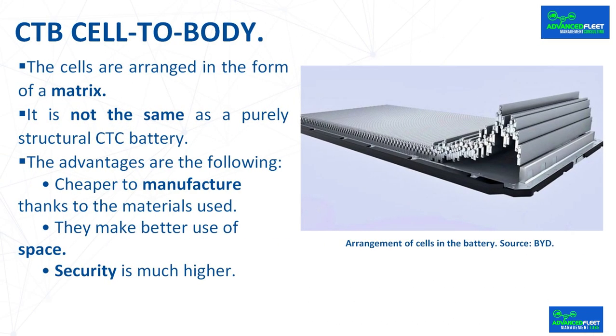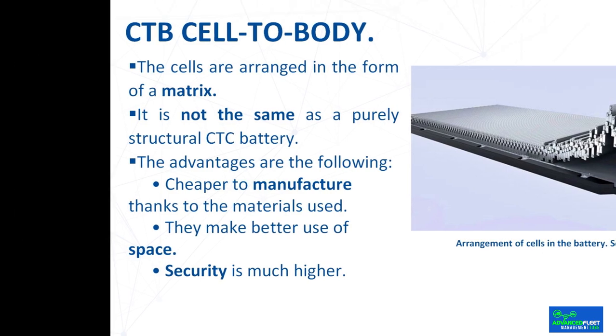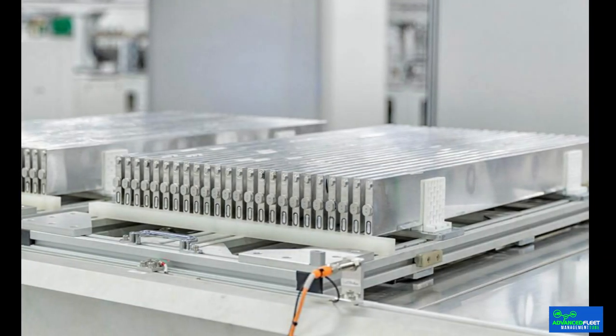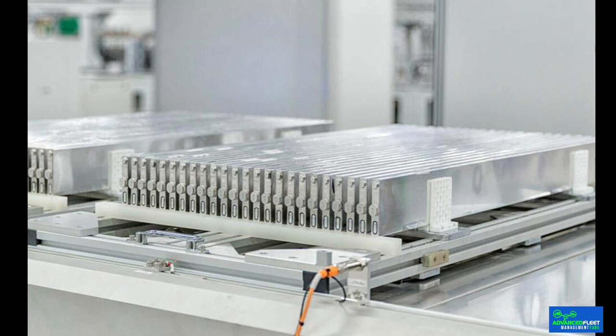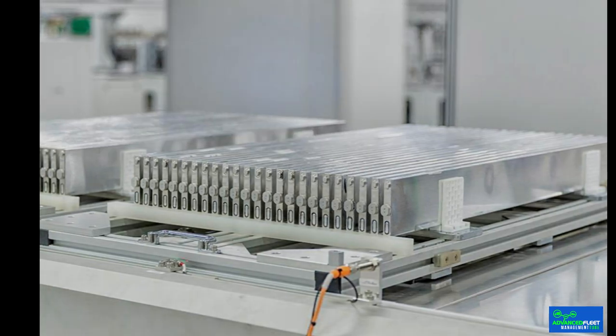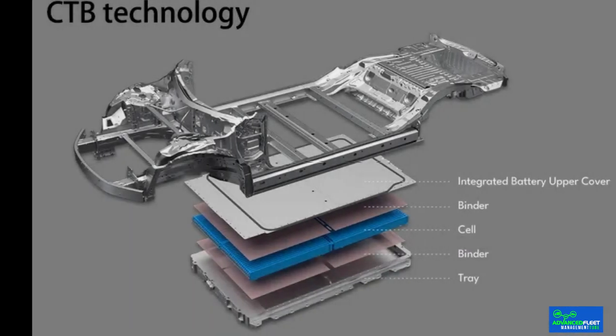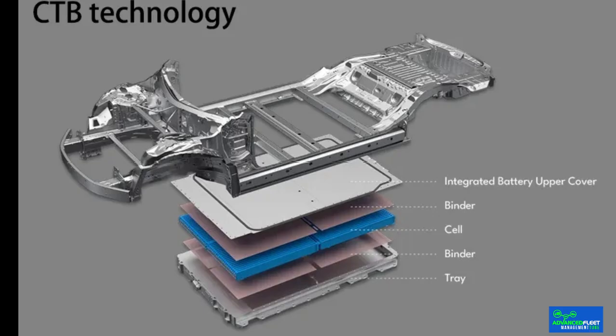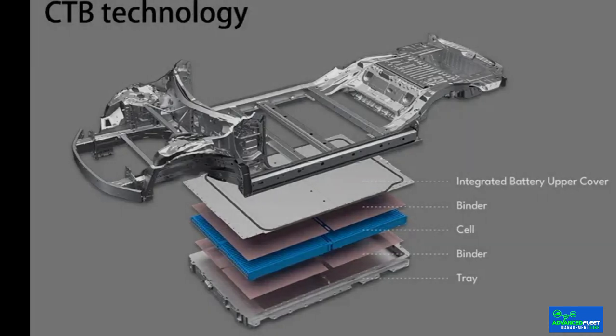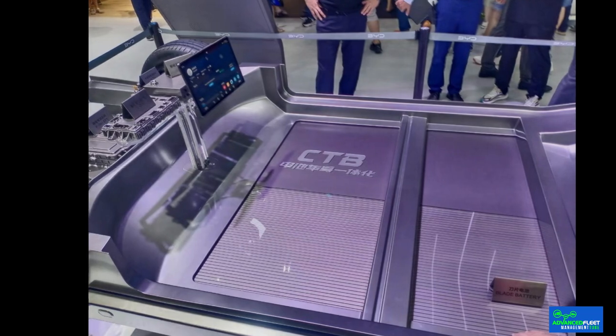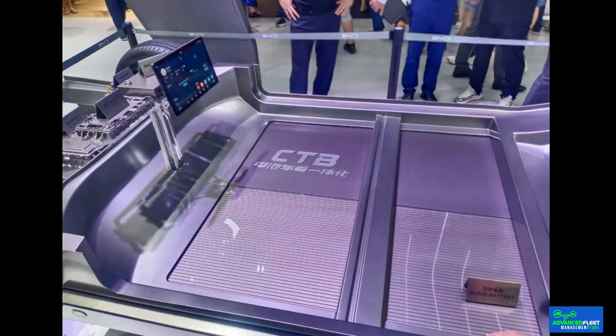CTB cell-to-body: the cells are arranged in the form of a matrix, and each cell, almost a meter long, also acts as a structural reinforcing beam that increases torsional rigidity and increases safety in the event of a vehicle impact. The battery pack also features high-strength aluminum cross members at the top and bottom to improve vertical rigidity and safety. Unlike a purely structural CTC battery, the cells are not installed directly in the vehicle chassis but are part of a package attached to the chassis — effectively a structural package of cells.